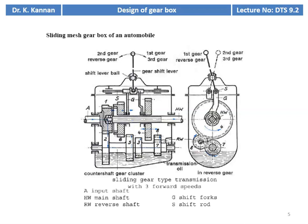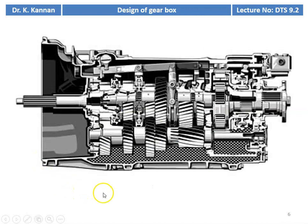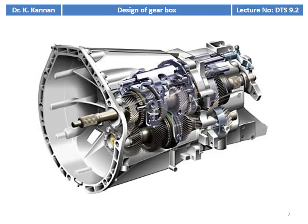This is a sliding mesh gearbox of an automobile. By shifting the lever, we can get different output speeds, and we find a number of gears for the different stages of gear shifting. This is the multi-speed gearbox of a gas turbine generator unit — the shaft connecting the gas turbine and the electrical alternator or generator. This is another multi-speed gearbox used in the generator and turbine unit.